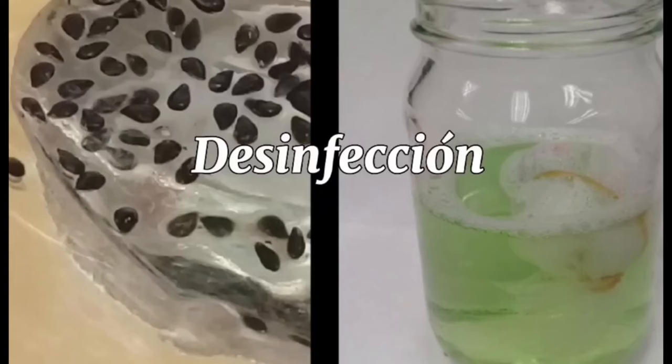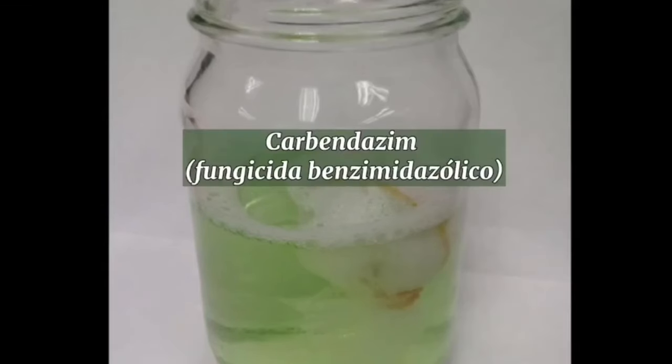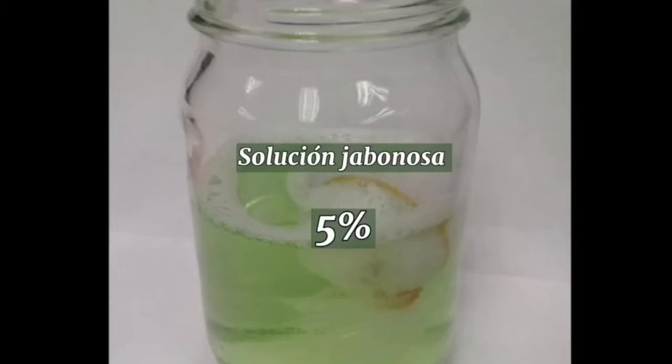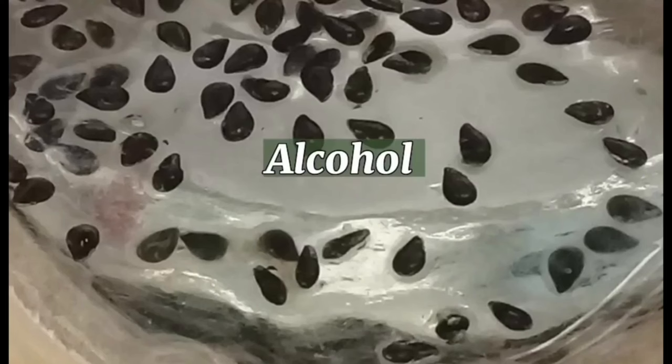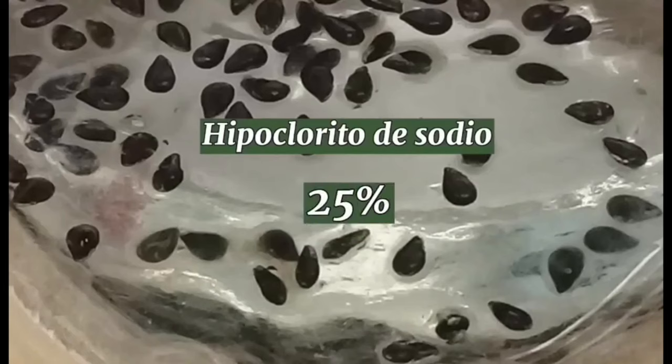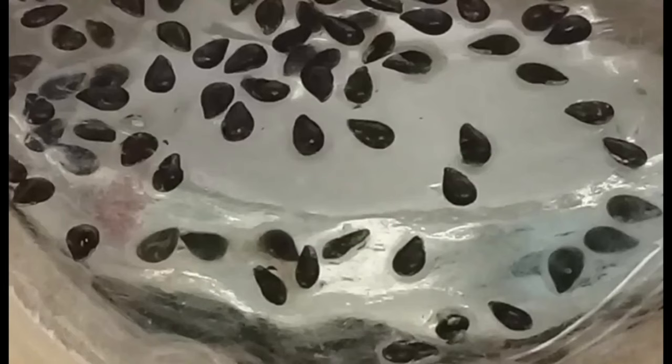Se desinfectaron las semillas en una solución de carbendazim al 0.2% durante 15 minutos. Posteriormente, una solución jabonosa al 5% por 12 minutos, seguida de alcohol al 96% por 1 minuto. Finalmente, una solución de hipoclorito de sodio al 25% por 18 minutos y tres enjuagues con agua destilada estéril dentro de la campana de flujo laminar.